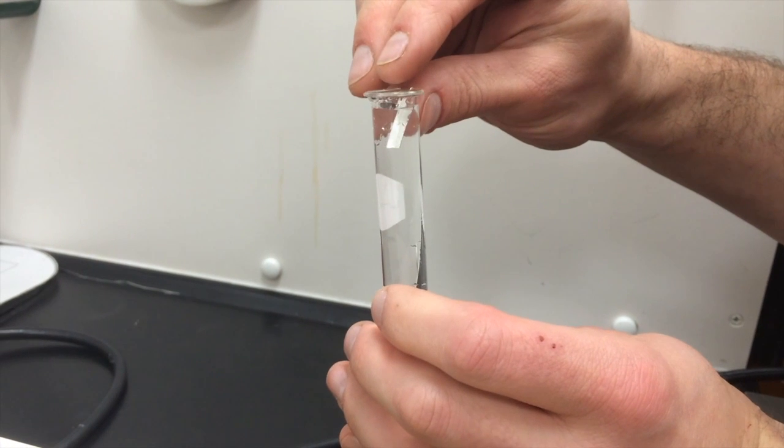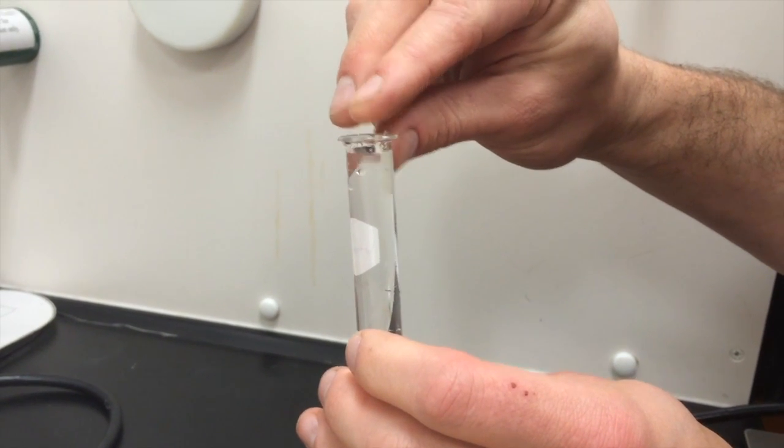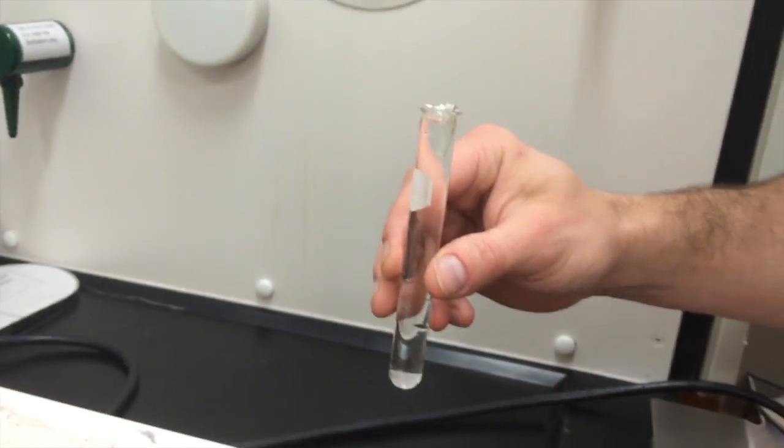We'll now look at the bubbles produced from a metal and acid reaction. For this, bend the magnesium strip so that a small lip forms in the metal, and hang it from the inside of the test tube like so.